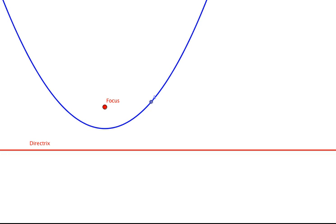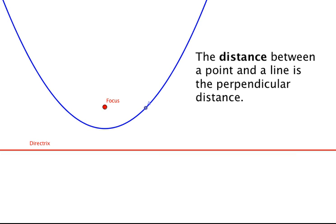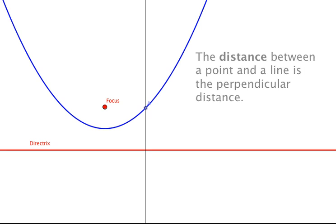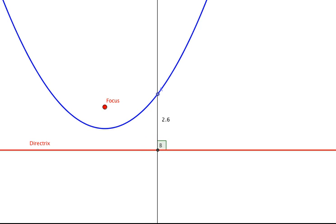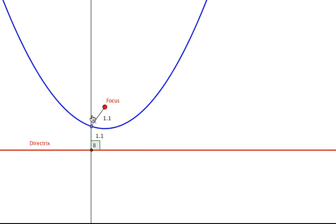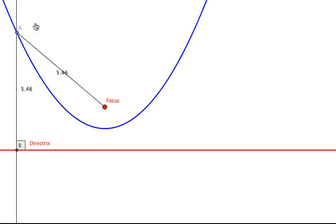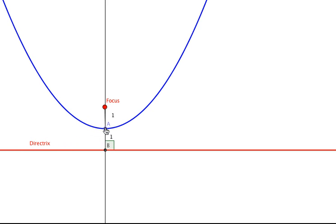So let's take this arbitrary point. If we want to see how far away it is from this line, we need to remember that the distance between a point and a line is represented by the segment that is perpendicular to that line and passes through the point. So let's construct that and measure the segment. Now let's measure the distance between this point and the focus. And as you can see, the distances are the same. And as we move this point around the parabola, we can see that it's always equidistant from the focus and the directrix.